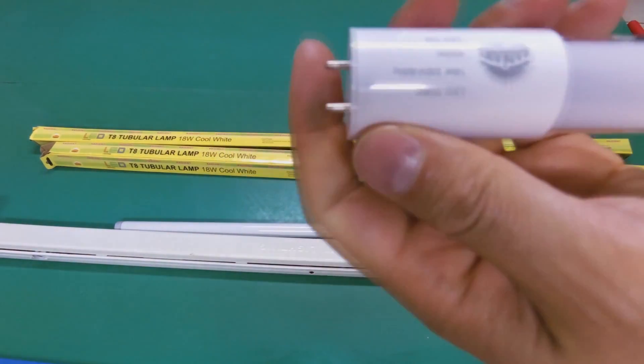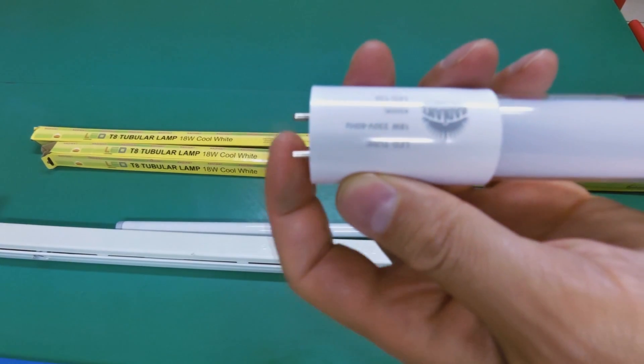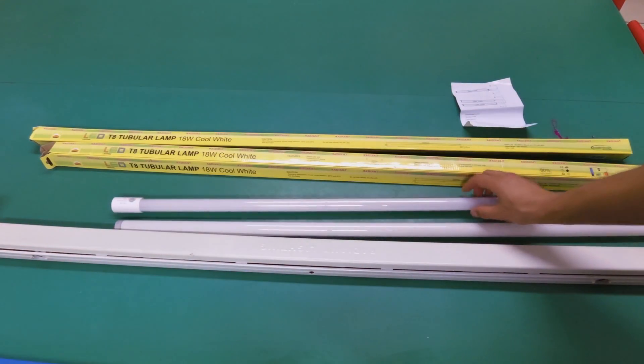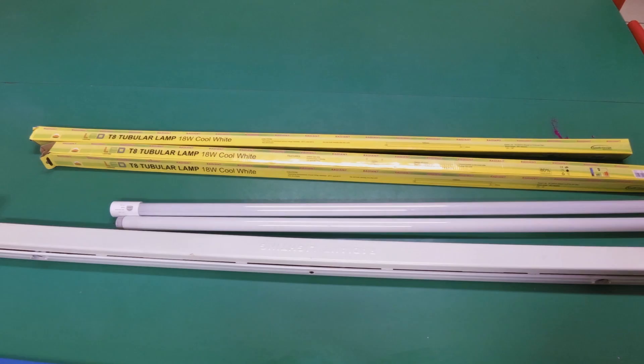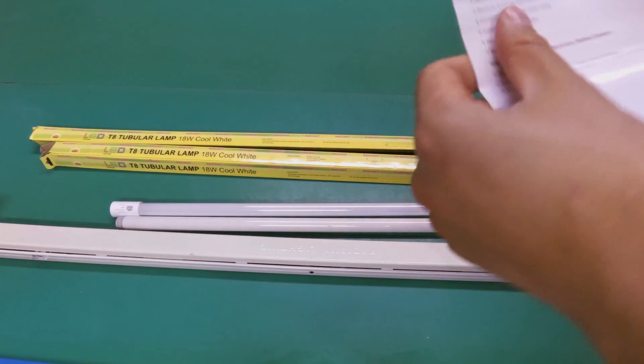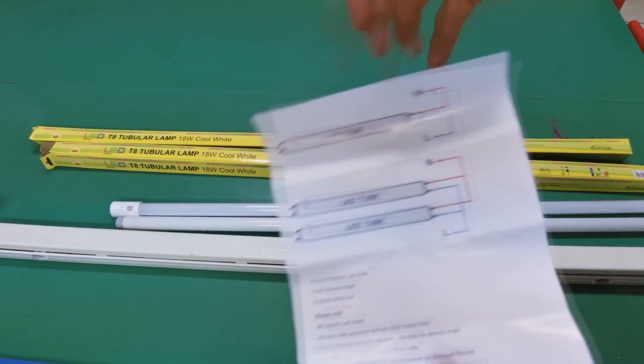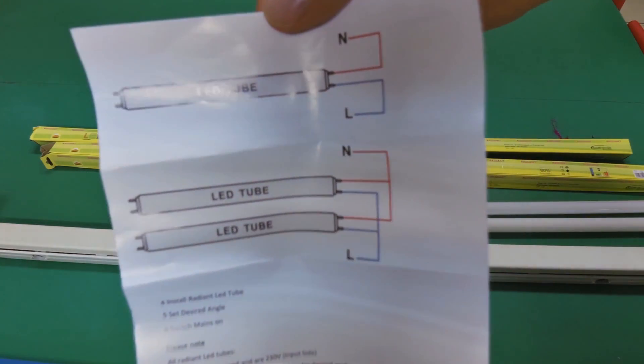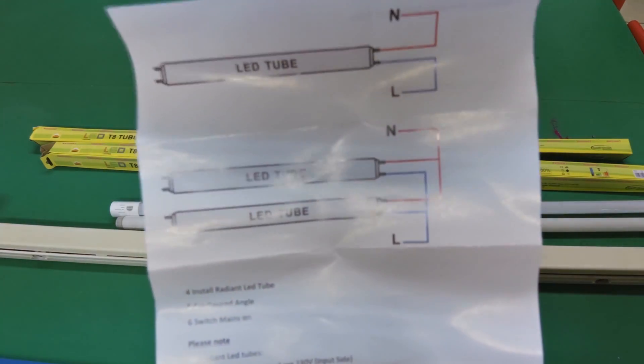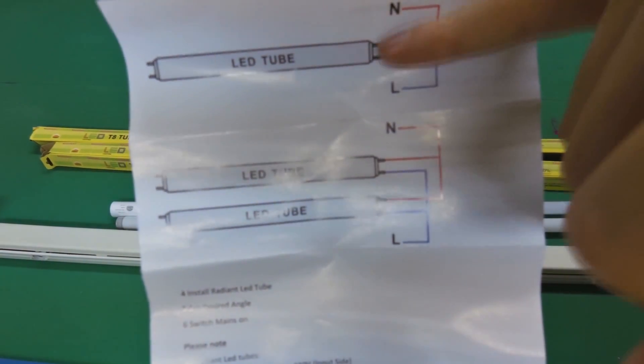Now very important is not all LED tubes are the same, so it is quite important to look at the instructions that come with your LED tube. Now in terms of this LED tube, it again shows the live and the neutral is only connected to one side of the tube.